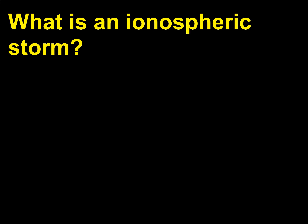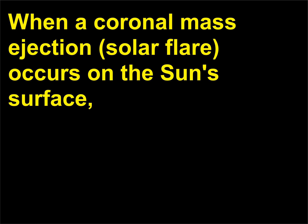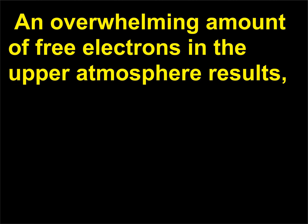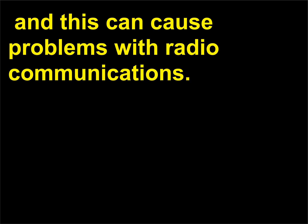What is an ionospheric storm? When a coronal mass ejection, or solar flare, occurs on the sun's surface, it can dramatically increase the amount of photoionization in the ionosphere. An overwhelming amount of free electrons in the upper atmosphere results, and this can cause problems with radio communications.